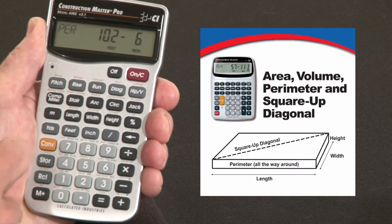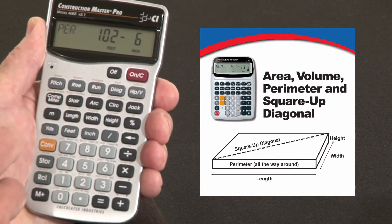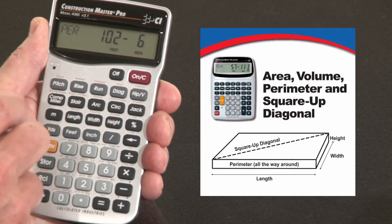Press it again. There's the perimeter. That's how many lineal feet around this pad you'll need for any kind of form boards or trim or treatment like that.